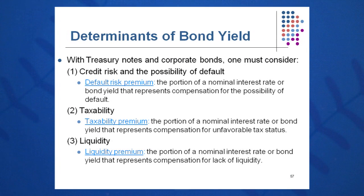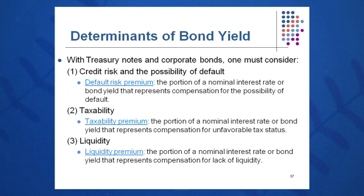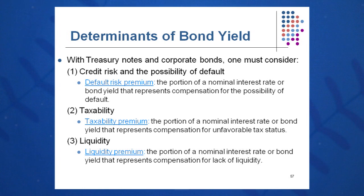When it comes to determinants of bond yield for a corporate bond, there is extra compensation we require. We want a default risk premium — part of our total interest rate comprised of extra compensation for the possibility of default on the bond. A corporation might default if they go bankrupt or run through a difficult financial stretch, so we want some protection in the form of a default risk premium.